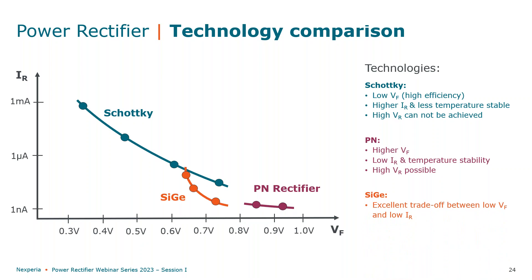Last but not least, we have silicon germanium, which shows a very nice trade-off between a low VF and low reverse leakage characteristics.